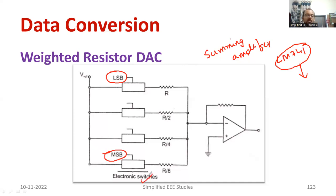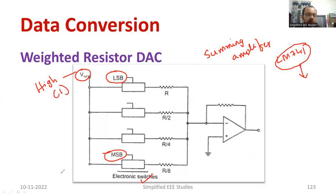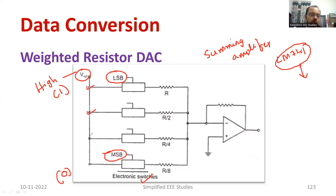The V-reference represents the high signal — that is logic one. If it is connected to ground, we consider it as zero. So these represent the digital information: one, zero, one, one — like that. These are the digital bits, for example four bits of information, and they are connected with the electronic switches.